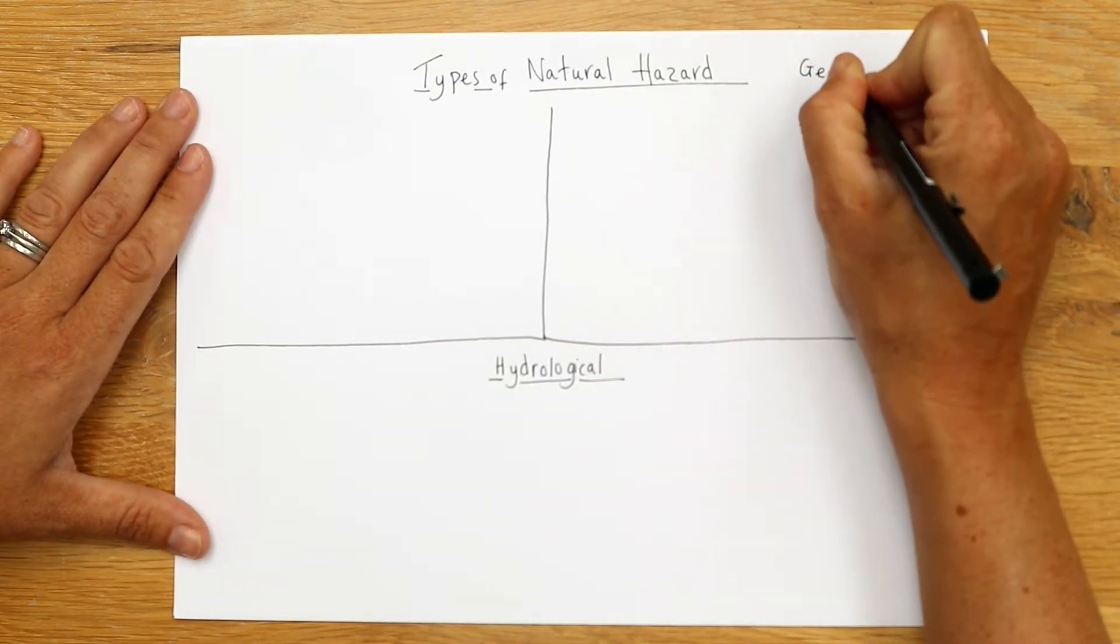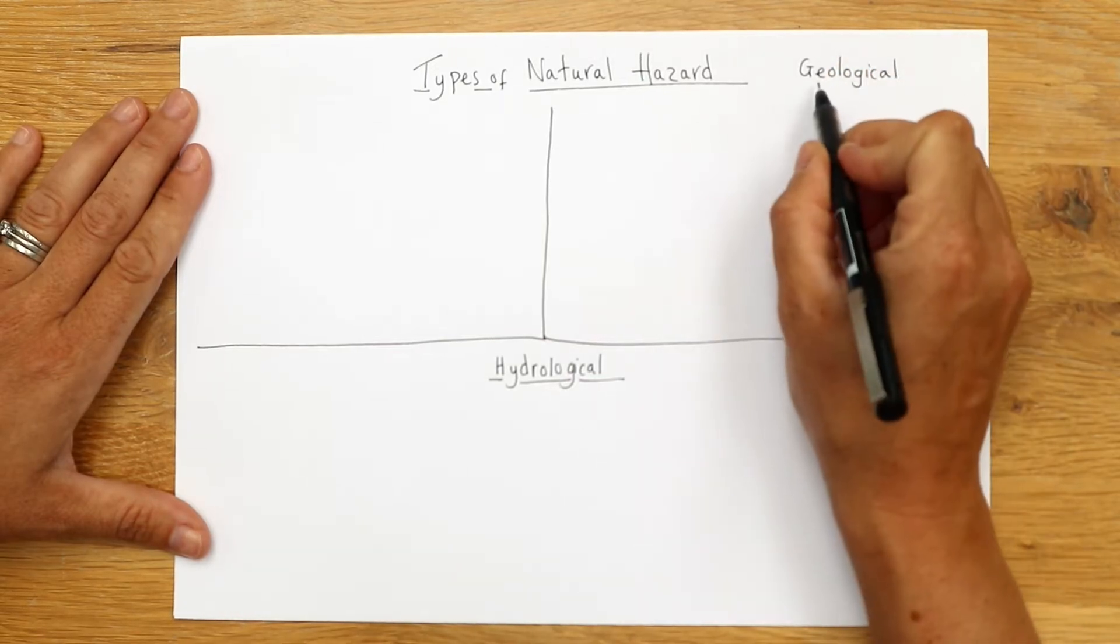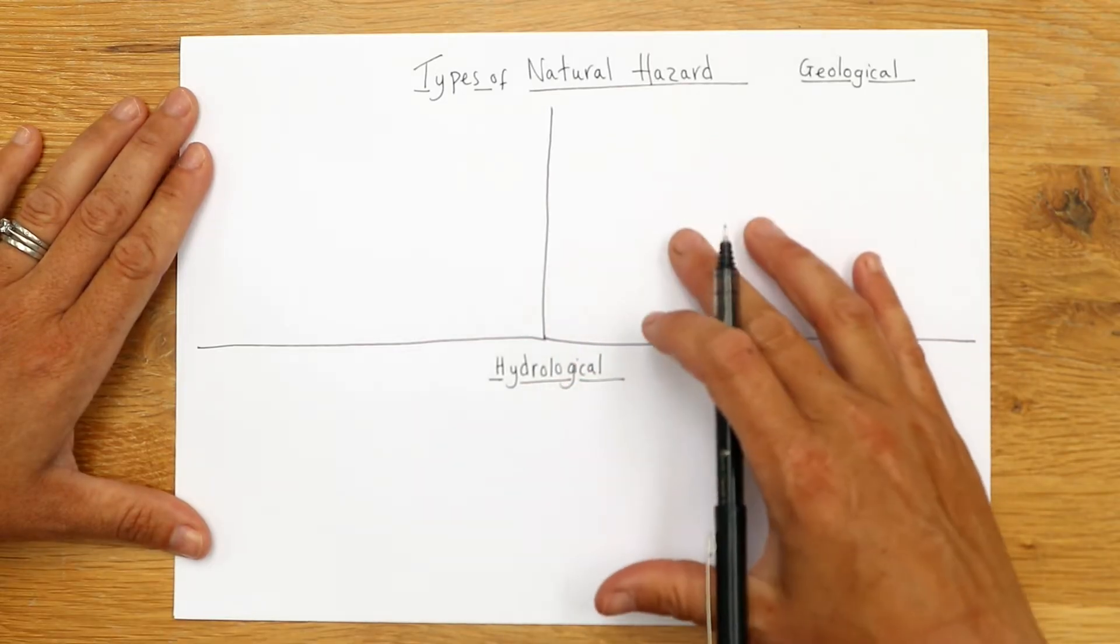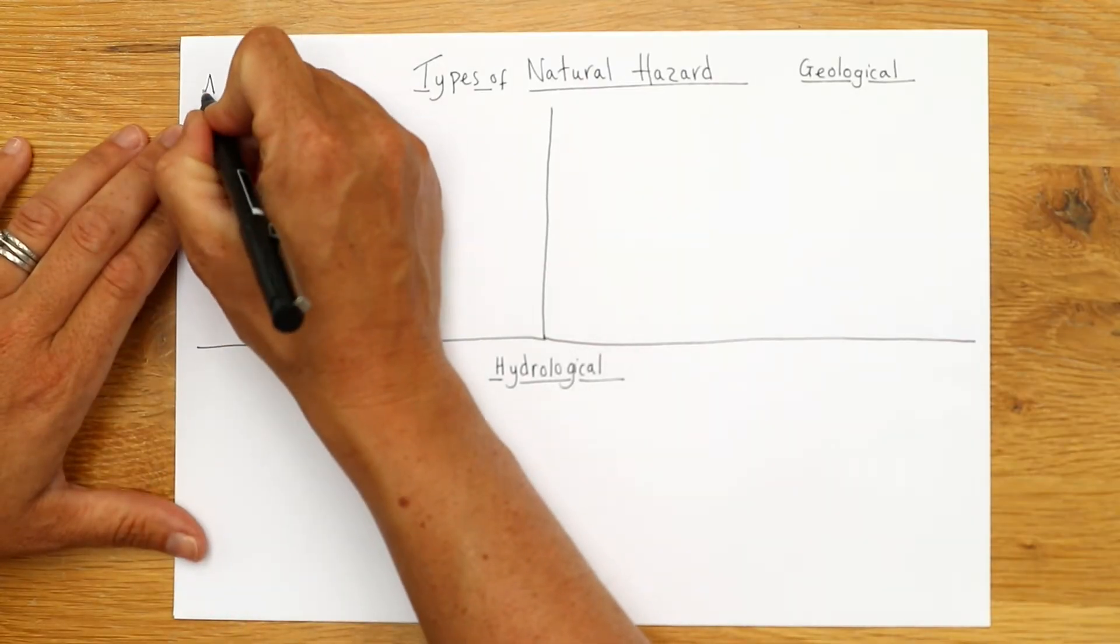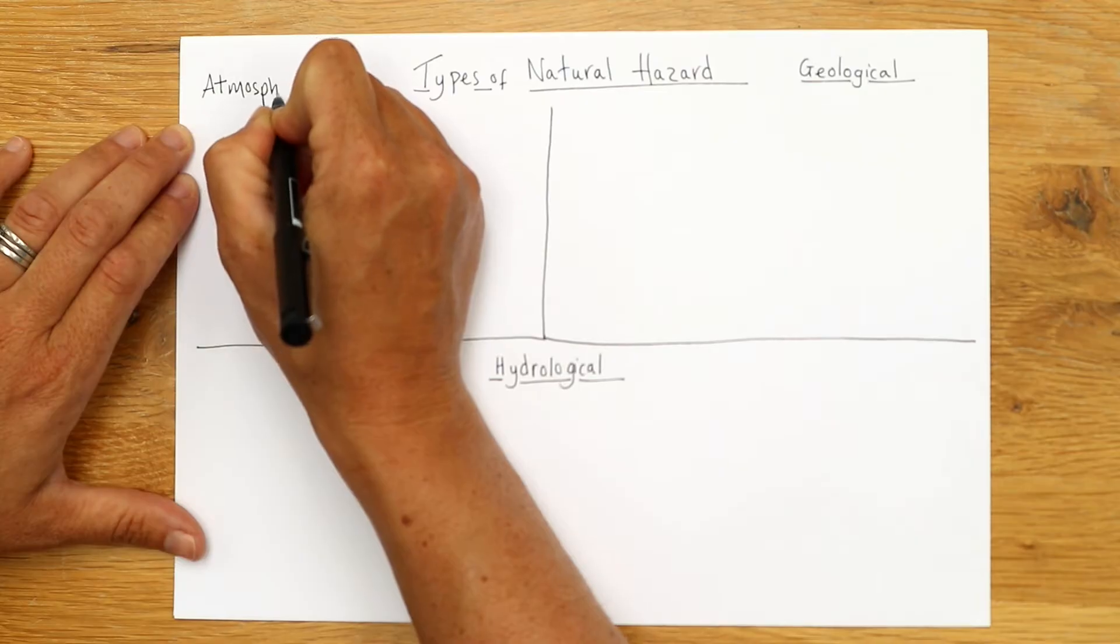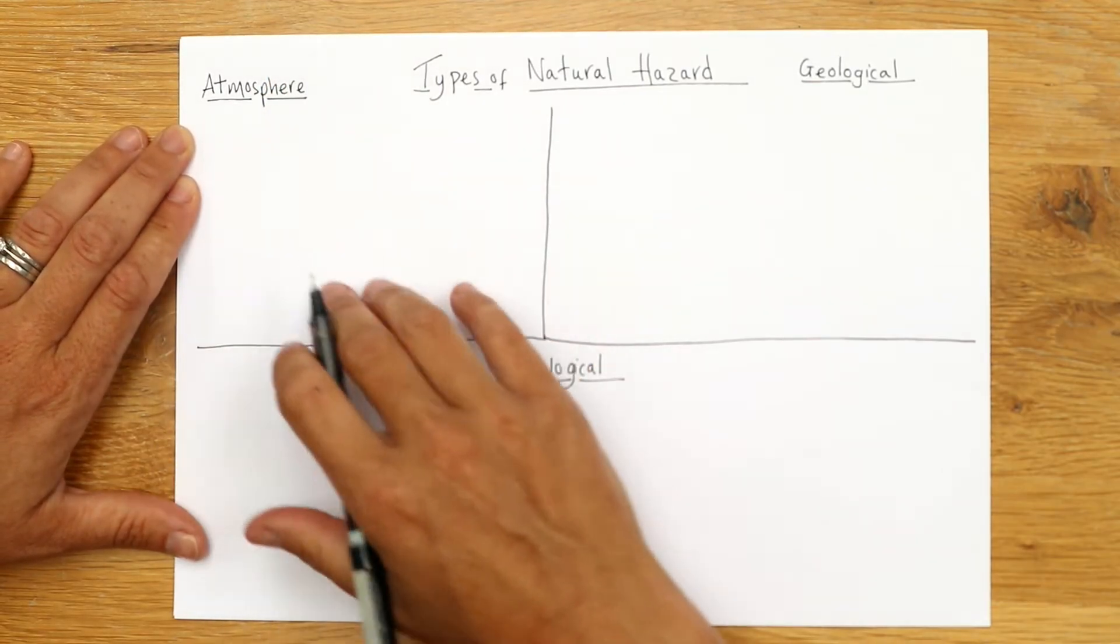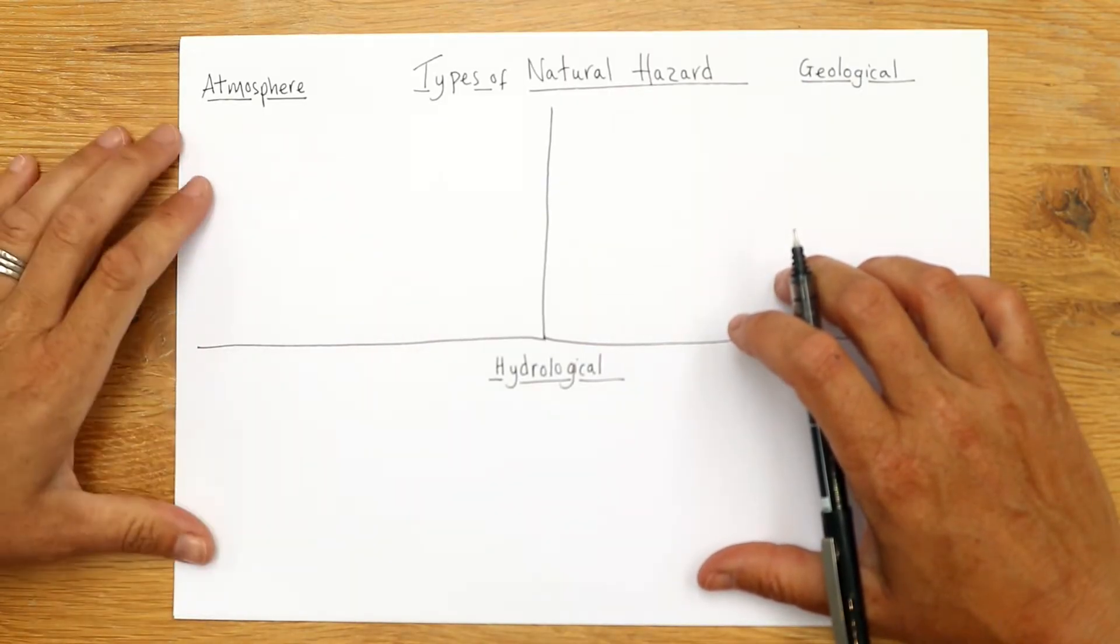So that's geological. Geo means earth, so these are things to do with the earth, like earthquakes and volcanoes and tsunamis. And then over here, we're going to title it atmospheric. Obviously atmosphere is up there in the air, so it's things that happen in the atmosphere that cause issues for people as well.